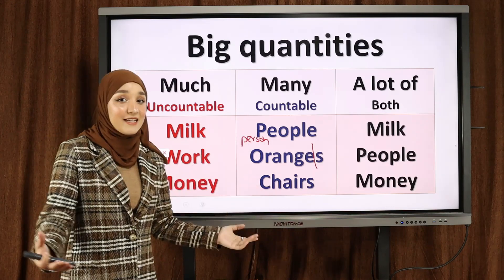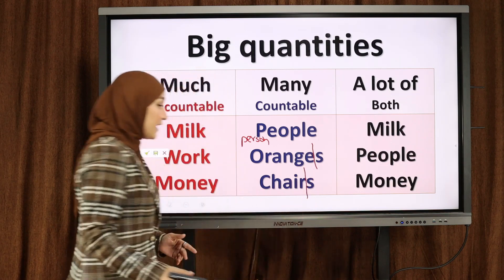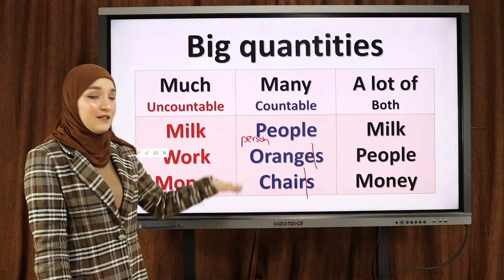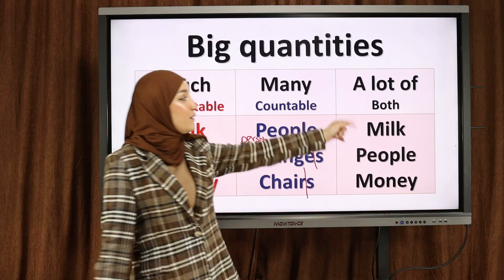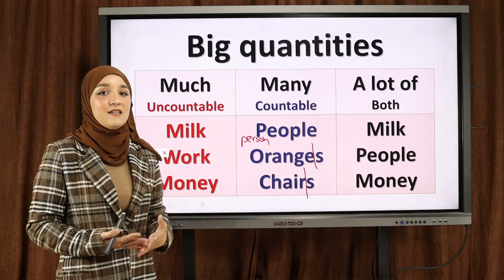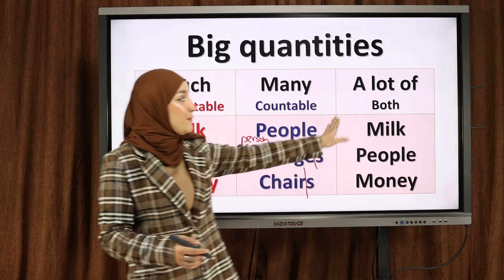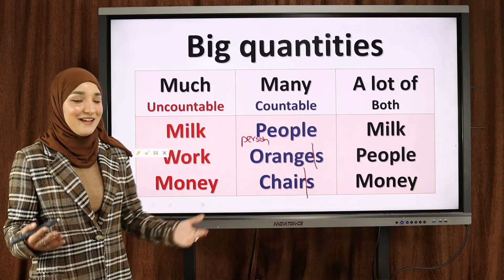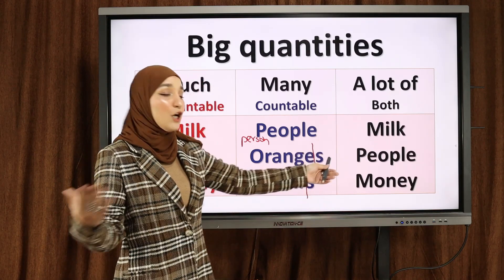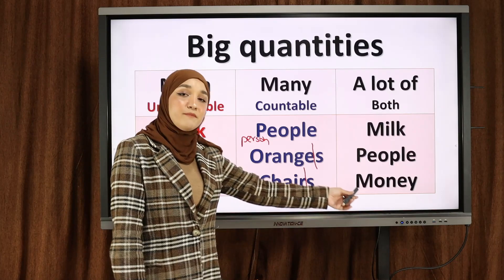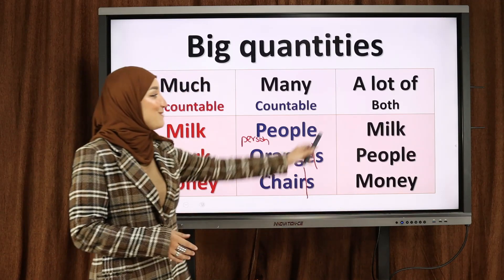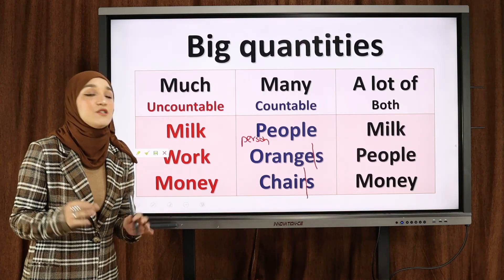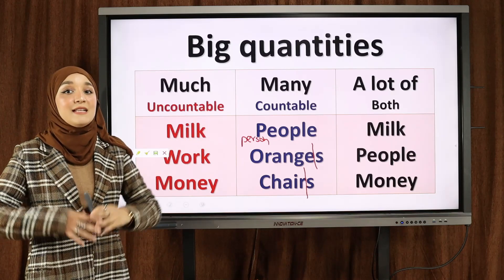Chairs — كراسي. Chairs is in the plural — إذا أردنا أن نتحدث عن كرسي واحد، we say 'one chair' or 'a chair'. We use many with countable nouns. A lot of — we can use it with both. If you don't want to make a mistake, you can use 'a lot of'. We can say: a lot of milk, a lot of people, a lot of money. A lot of can be used with both countable and uncountable nouns.